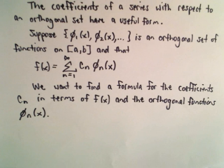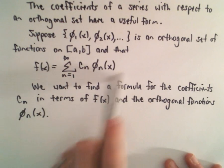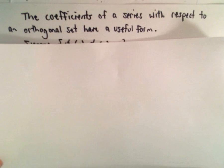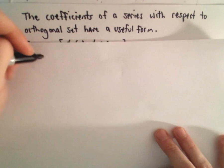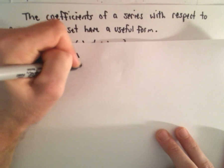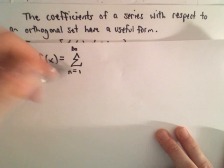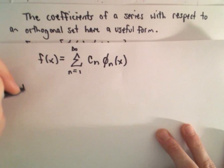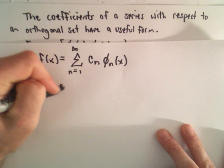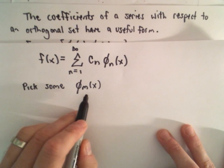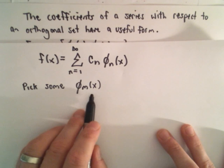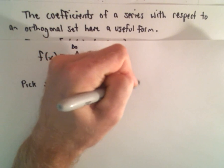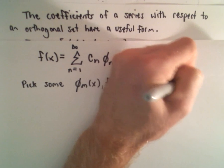One thing we should discuss and are going to kind of glaze over is in what sense does this series actually converge — that's an important detail we're skipping. So, just a rough outline of why we can find the coefficients the way we do: f of x equals the sum of c sub n times phi sub n of x. What we're going to do is pick some phi sub m of x — one of those functions from our orthogonal set — and find its inner product with our function f of x.